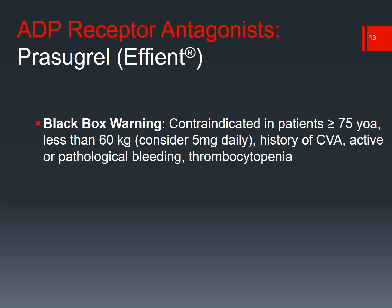Prasugrel can be contraindicated in the elderly population — those greater than or equal to 75 years of age. For low-weight patients under 60 kilos, we may consider a lower dose. If they have a history of ischemic stroke or CVA, we would contraindicate Prasugrel, as it is only used for cardiac indications. Active pathological bleeding and thrombocytopenia are also contraindications — if they have a low platelet count, we probably should not be using anti-platelets.